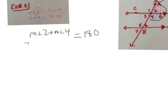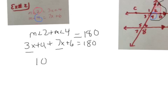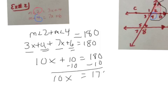Well, so that would be the measure of angle two plus the measure of angle four equal 180. Substitute in. Measure of angle two is 3x plus 4. Measure of angle four. Addition sign. 7x plus 6. That equals 180. 7x and 3x is 10x. 4 and 6 is 10. Solve by subtracting 10 from both sides. You get 10x equals 170. Divide by 10. You get x equals 17.